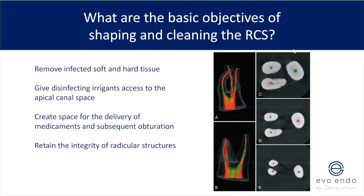It has become fundamentally important to retain the integrity of radicular structures, especially around the neck of the tooth. Through finite elemental analysis studies, forces concentrate around the narrowest part — the neck — and the more tooth structure you have there, the more fracture-resistant the tooth will be. The images on the right show that many areas of the root canal walls remain completely untouched, which is why I always call it shaping and cleaning together, not independently.